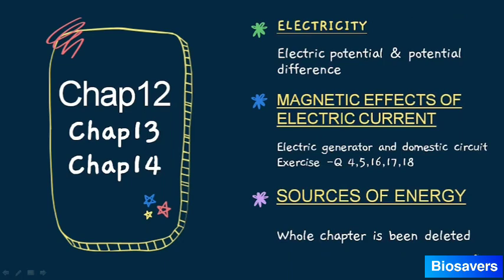In Chapter 12 — Electricity — the topic of electric potential and potential difference has been deleted; it was an easy topic but has still been removed. In Chapter 13 — Magnetic Effects of Electric Current — electric generator and domestic circuit topics have been deleted, along with exercise questions 4, 5, 16, 17, and 18.